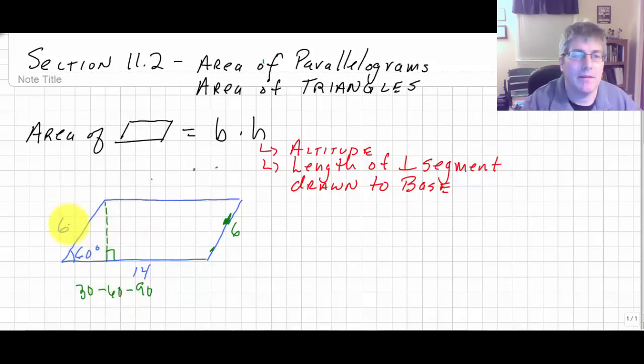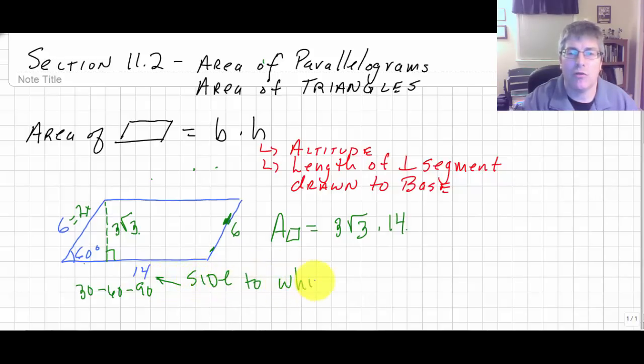So when we draw our altitude, we can use our properties of a 30-60-90 right triangle to calculate the height. And since the 6 is the 2x side, the x side is 3, and our height is 3 radical 3. So the area of this particular parallelogram, base times height, is 3 times the square root of 3 times 14. Now the base is simply the side to which the altitude is drawn.